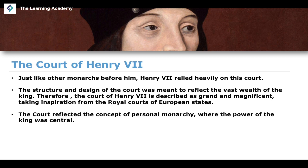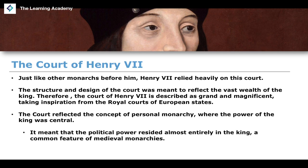Ultimately the king reflected the concept of personal monarchy — that political power was central to and emanated from the king himself. This was a common feature of medieval monarchies, stemming from the concept of the divine right of kings, and the court was designed to reflect this idea of a vast, wealthy king in full personal authority.